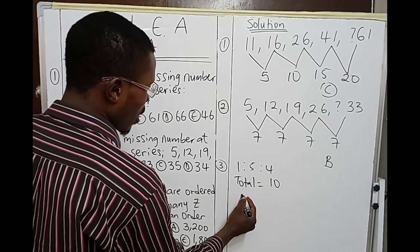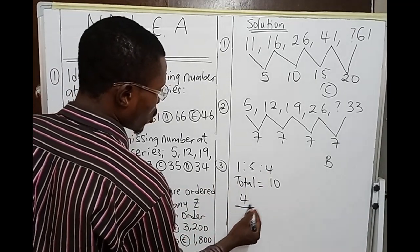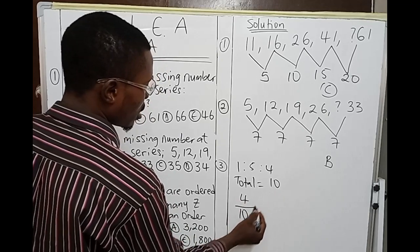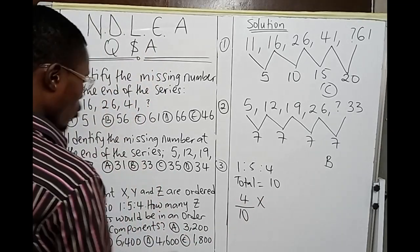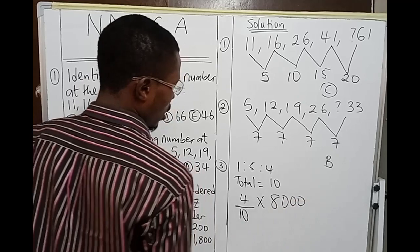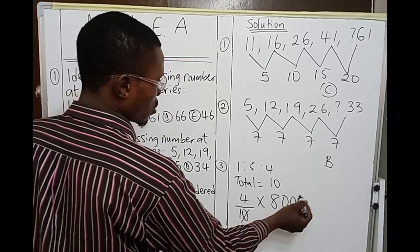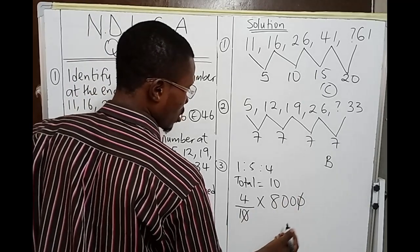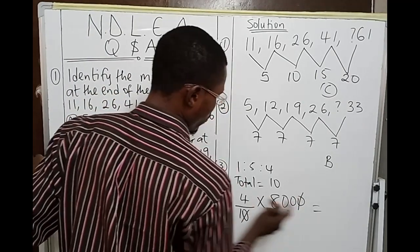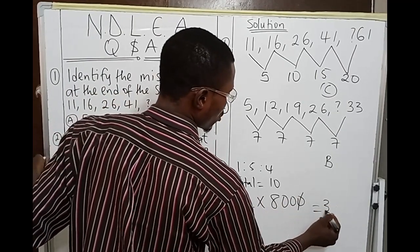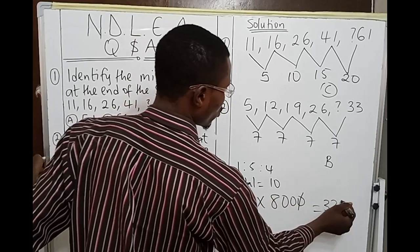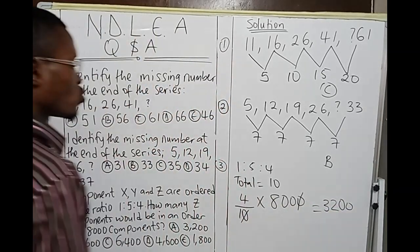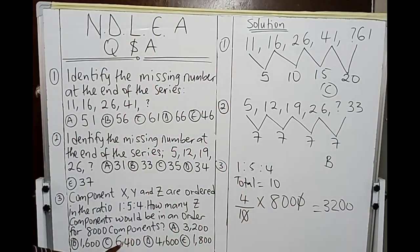We're going to have 4 over the total ratio 10, then times number of components 8000. This gives us—zero cancel out zero—4 times 800 will give us 4 times 8 is 32, so we have 3200 components, and that is given by option A.